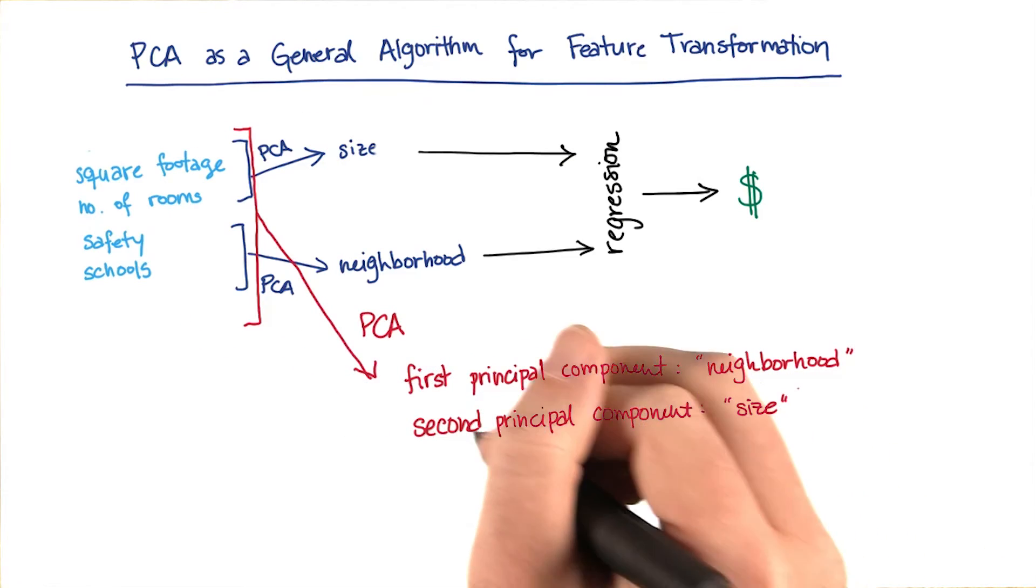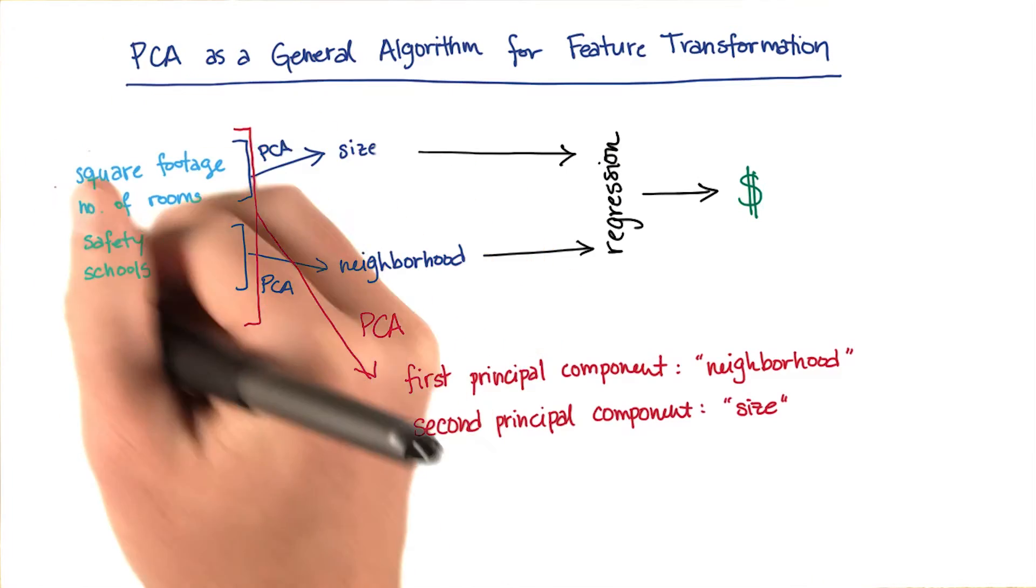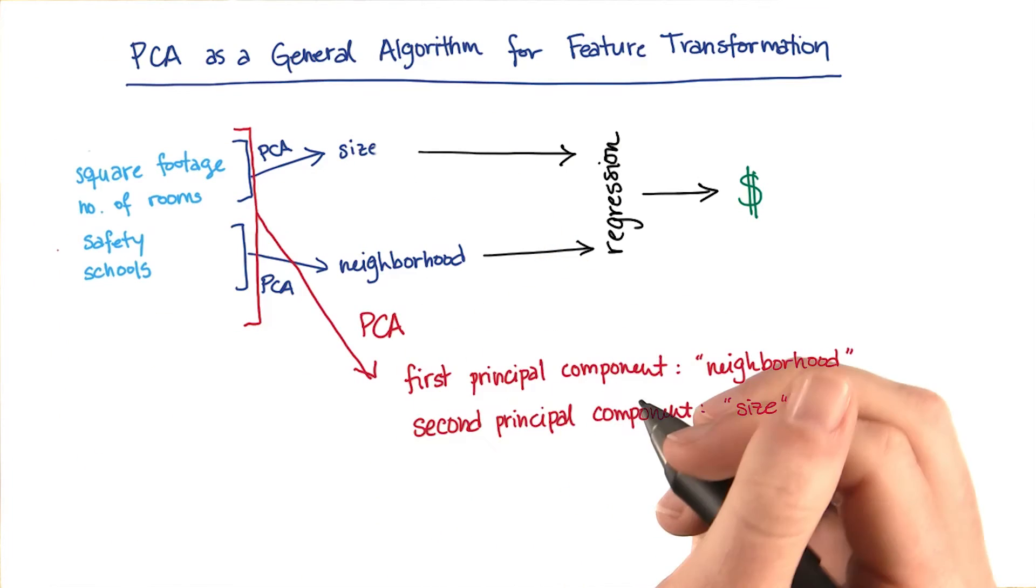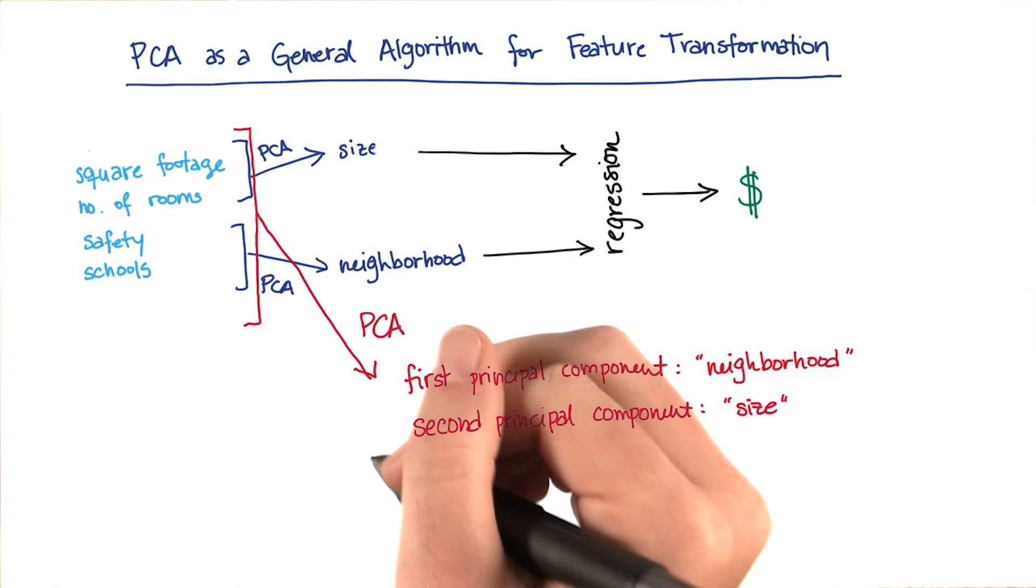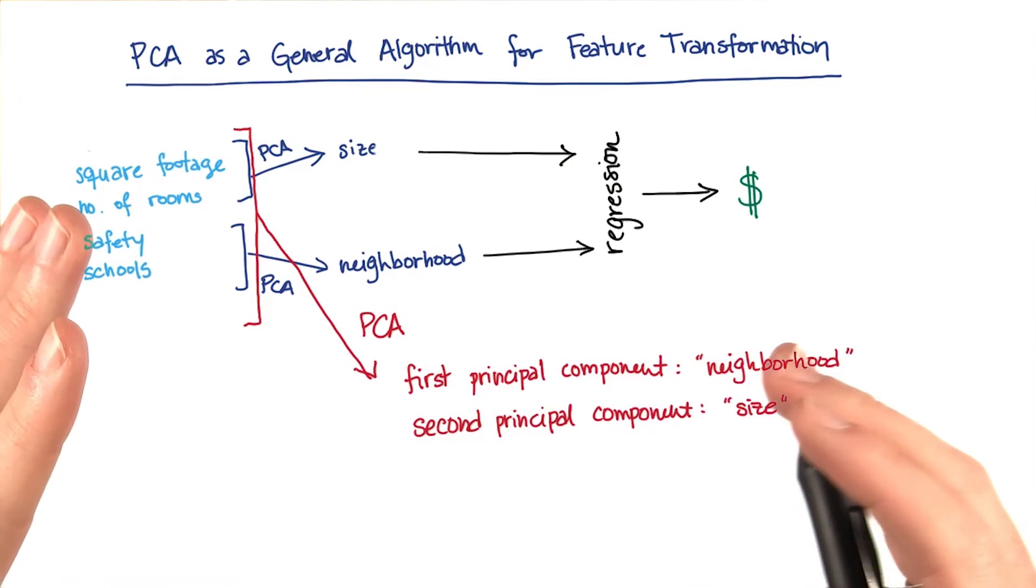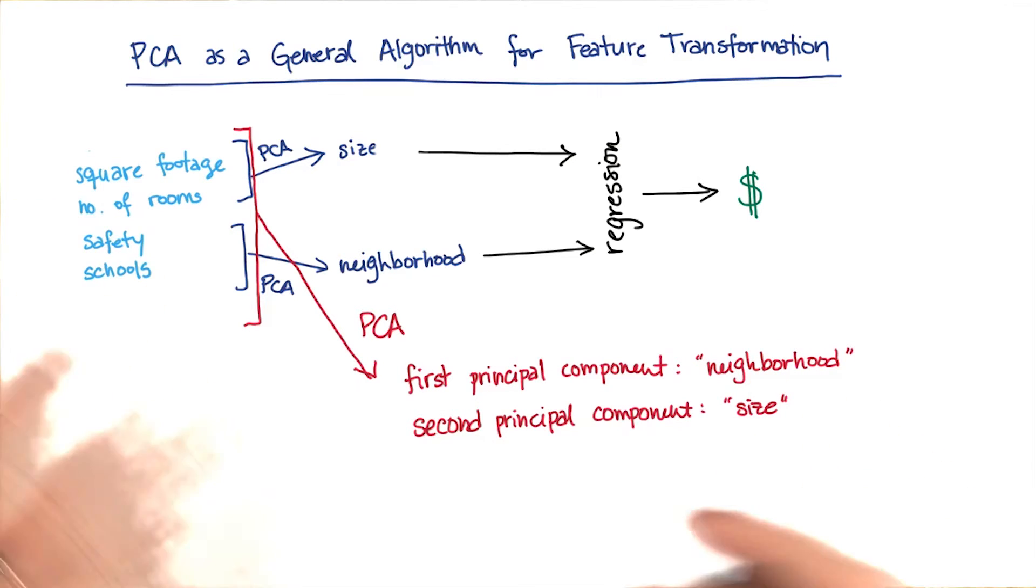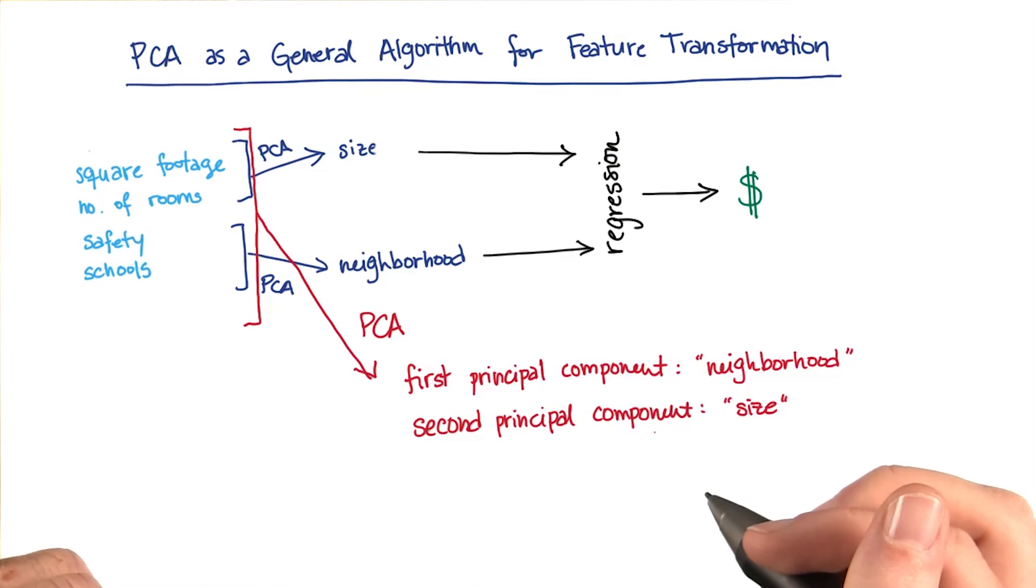But here's the magic of PCA. I can take a second strategy with this. What I can do is put all four of these features into PCA together. It can automatically combine them into new features and rank the relative powers of those new features. So if we have the case where we have two latent features that are driving most of the variation in the data, PCA will pick those out and call them the first and second principal components.